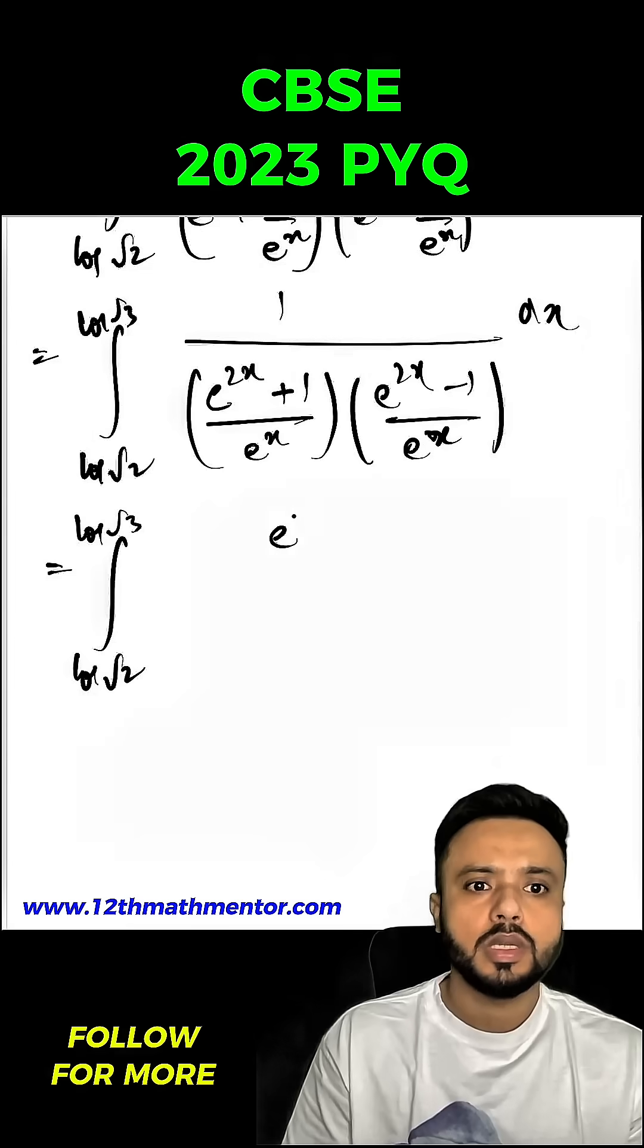It will be log root 2 to log root 3, e raised to the power x in the numerator, and here I am getting a plus b into a minus b.